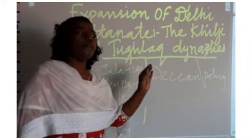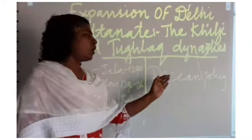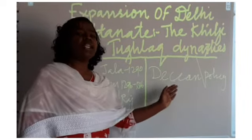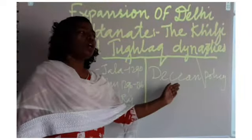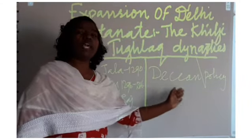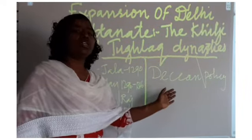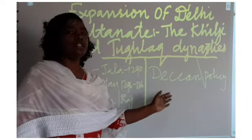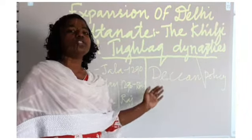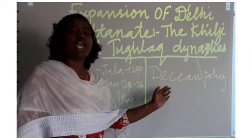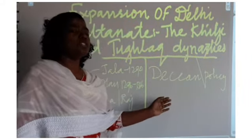He realized that if he annexed the Deccan, it would not be easy to rule from Delhi to Deccan. So in order to maintain good administration, he did not annex Deccan. Instead, he made all the rulers of Deccan accept his supremacy and pay tribute to Alauddin Khalji.